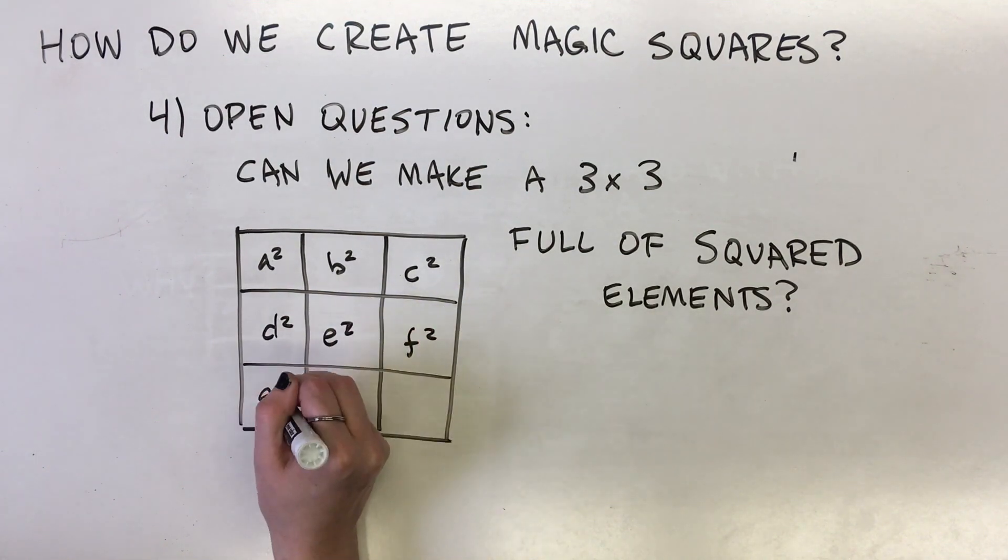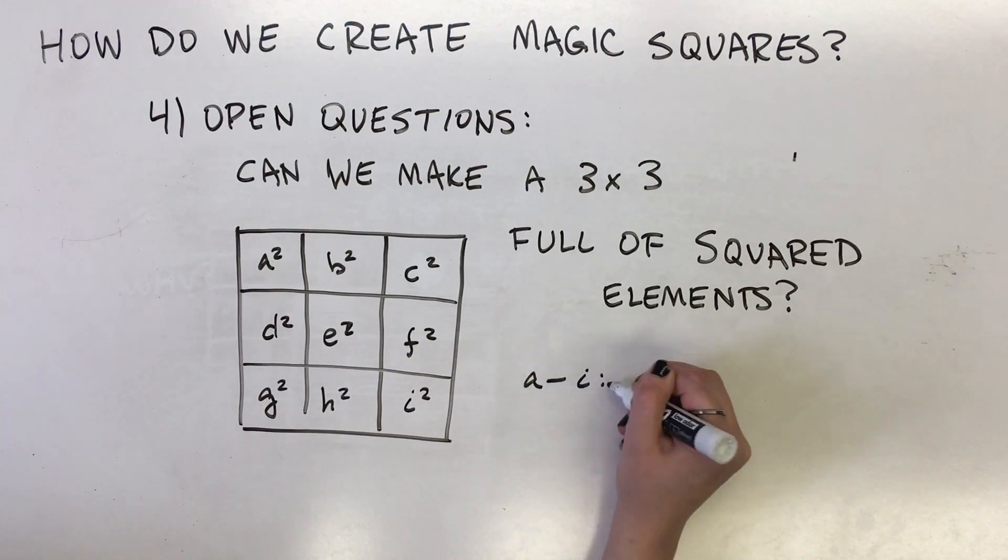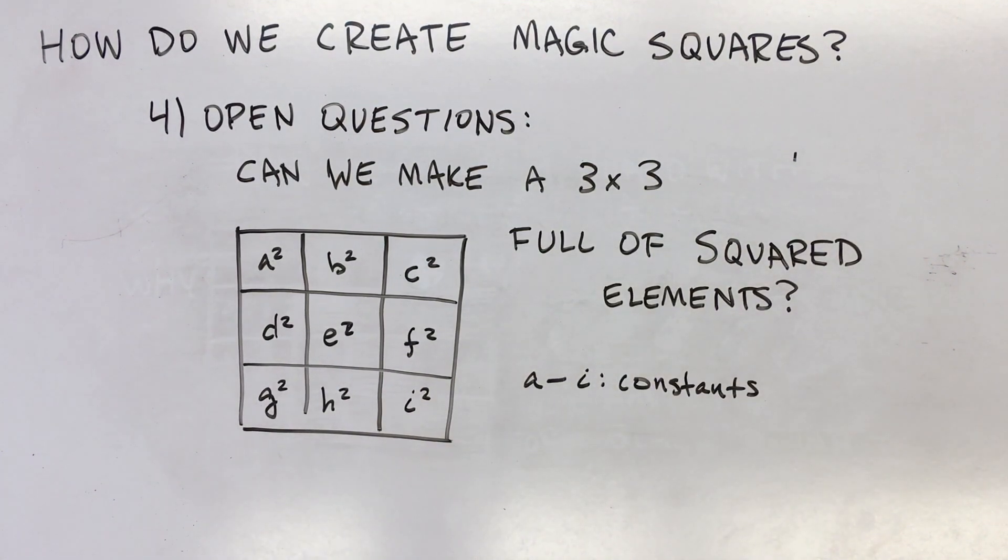There have been several attempts with one coming so close, with all sums equaling the magic constant except for one diagonal.